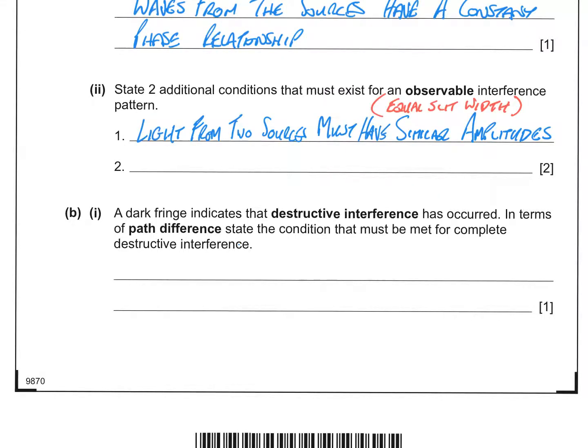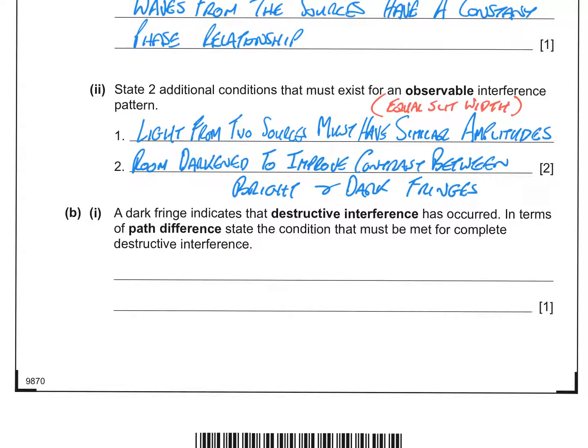So light from the two sources must have similar amplitudes, and that would also be achieved by making sure that you had equal slit width. And as we said before, you'd want the room darkened to improve the contrast between the bright and the dark fringes.